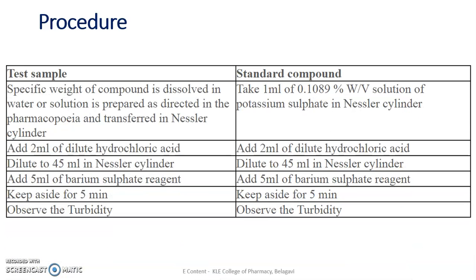The procedure: for the test and the standard, there is a difference in the addition of sample versus standard solution. In the test, a specific amount of the sample for which we are performing the limit test for sulphate is taken. In the standard, we prepare 0.1089% weight by volume of potassium sulphate solution as per the IP. One ml of standard sulphate solution is taken in the Nessler's cylinder marked as 'standard', and the specific amount of sample is taken in the test cylinder.